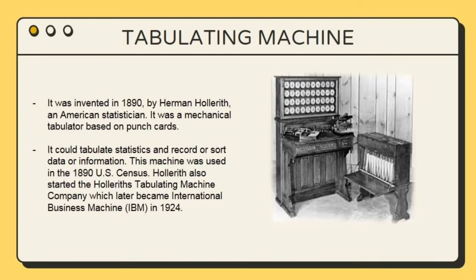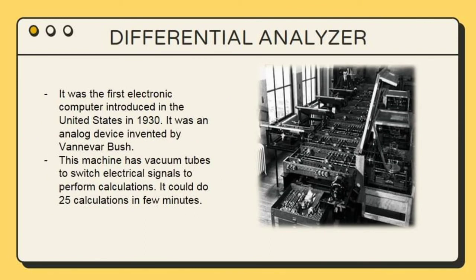Next is the Tabulating Machine. It was invented in 1890 by Herman Hollerith, an American statistician. It was a mechanical tabulator based on punch cards. It could tabulate statistics and record or sort data or information. This machine was used in the 1890 U.S. census. Hollerith also started the Hollerith Tabulating Machine Company, which later became International Business Machines, or IBM, in 1924.